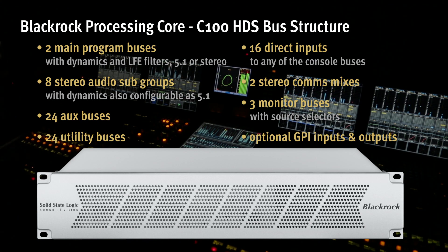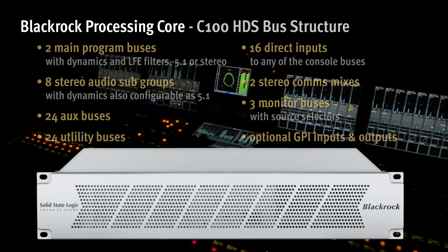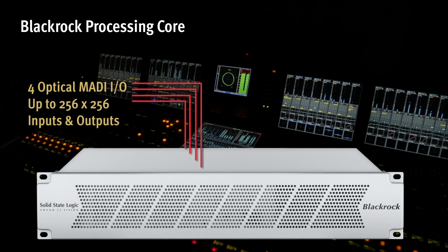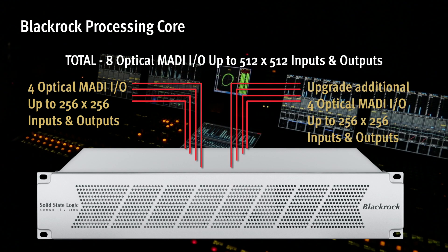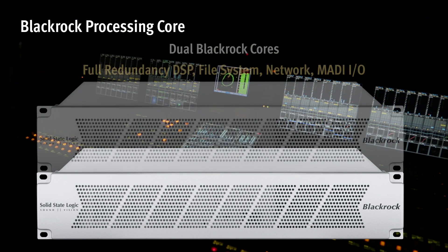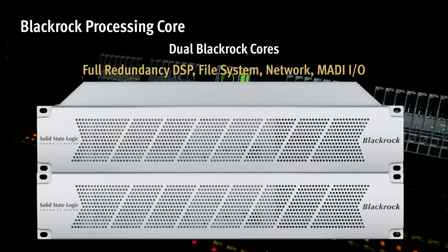The BlackRock core also includes a firewalled integration CPU, providing secure access to file management, diagnostics and SNMP facilities. It has four MADI optical I/O for up to 256 inputs and outputs that can be expanded to 8 ports offering 512 channels of I/O. If required, the C100 can be configured with dual BlackRock cores for full redundancy of DSP, file system, network and MADI I/O.